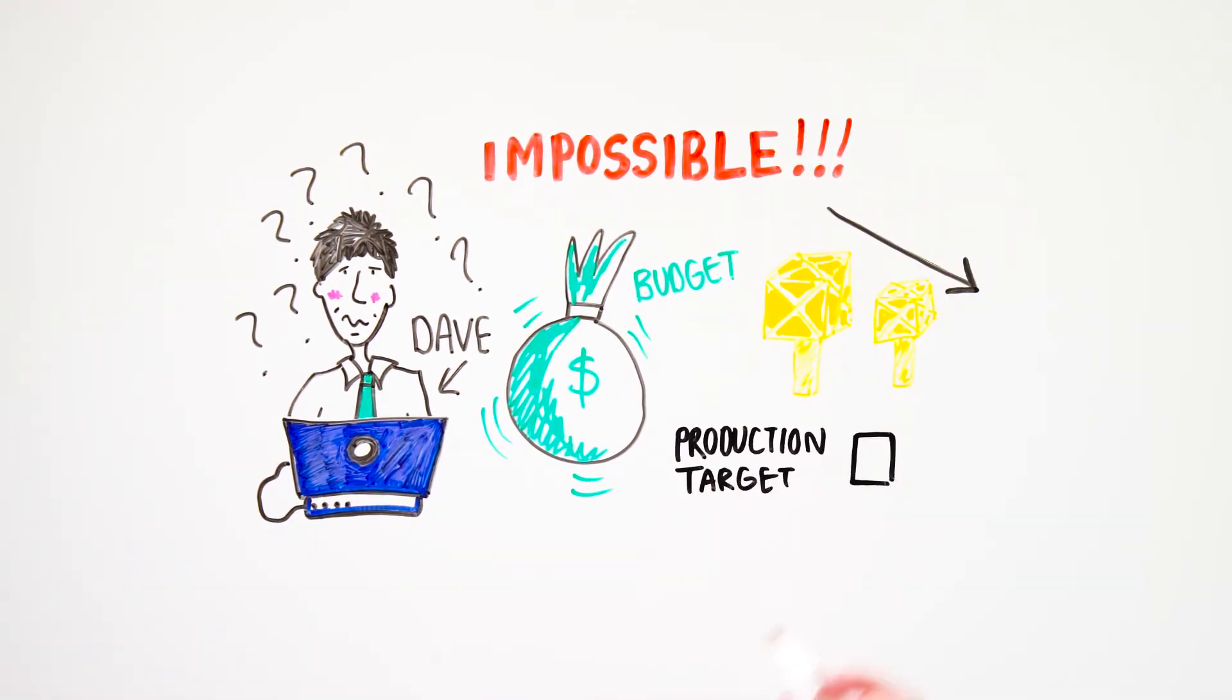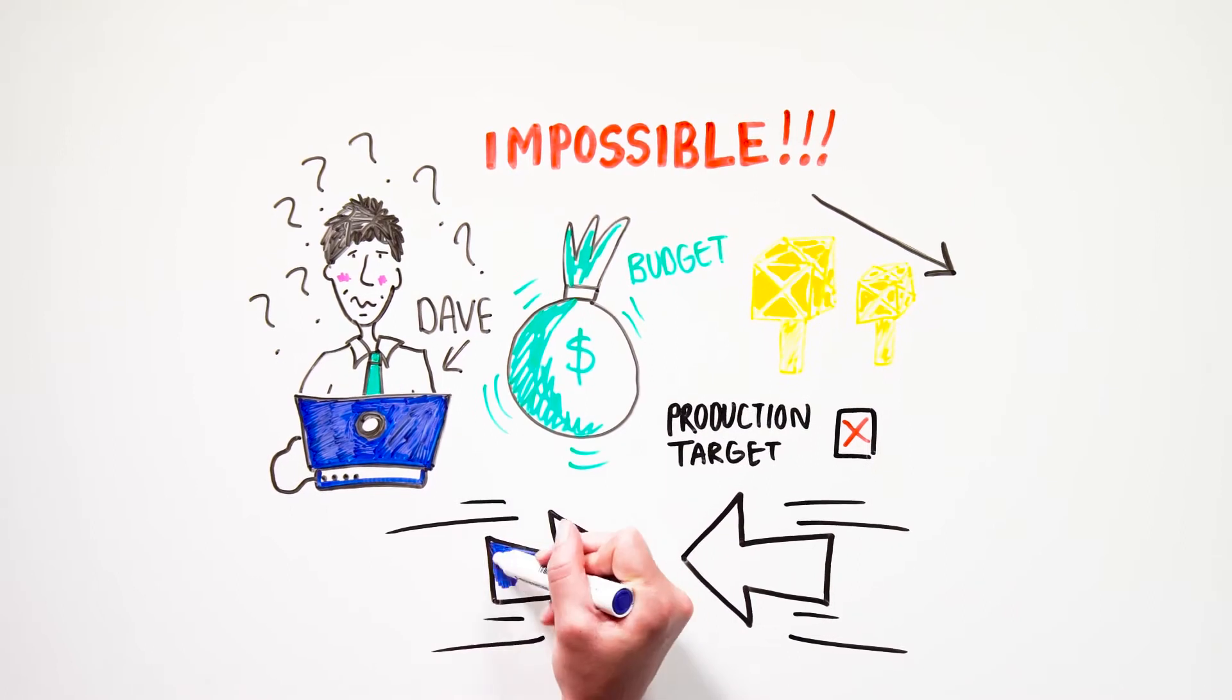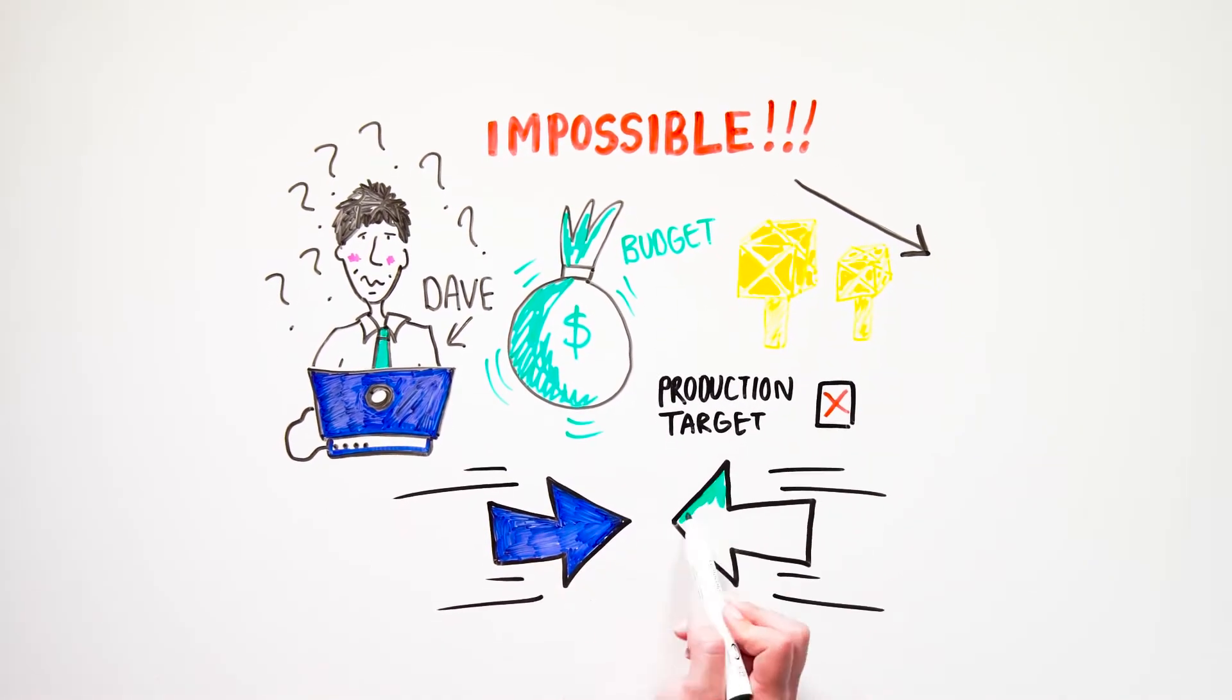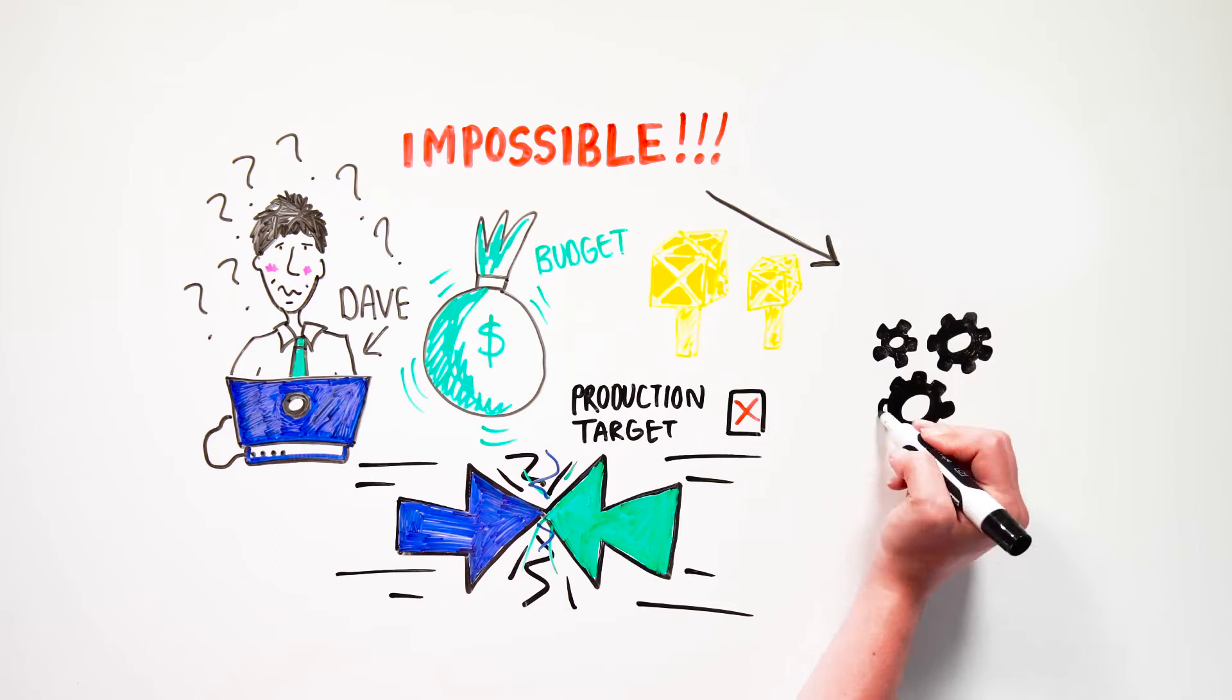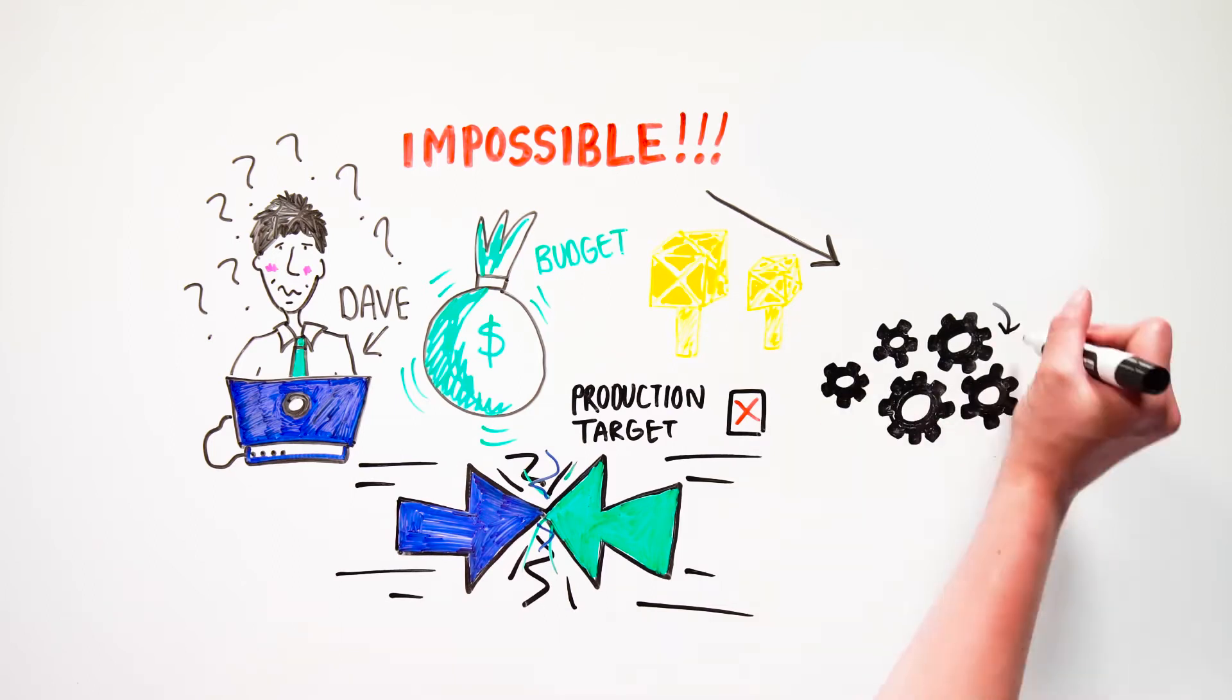But if we do that, then there is no way we can reduce our well count and still meet our overall production target. The two constraints seem to be working against each other. I don't see how we can make this work.